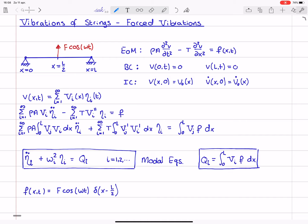So, this basically specifies that the distribution is zero everywhere, except at L over 2, in the neighborhood of L over 2, where it is infinitely high, in such a way that the integral equals f times cosine omega t.